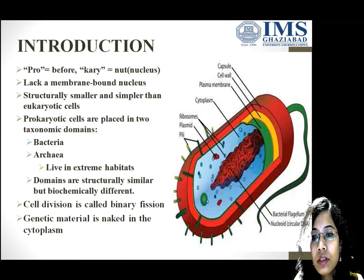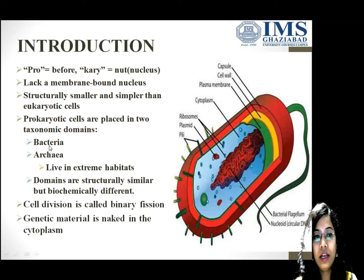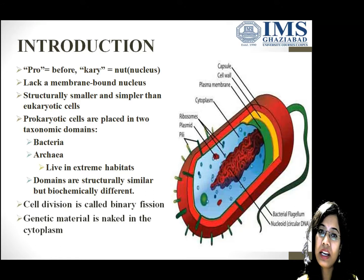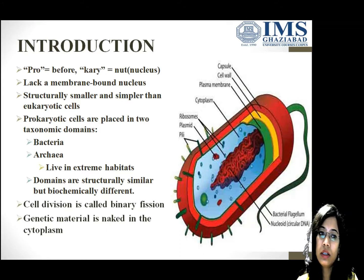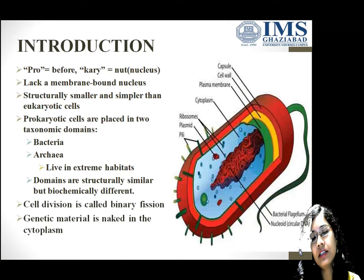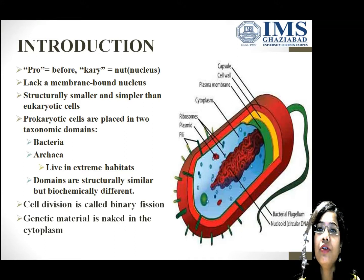Carl Woese in 1977 defined prokaryotes into two taxonomic domains. The first one is bacteria and the second one is archaea. Before this, we studied archaebacteria. In previous times, there were two taxonomic domains — bacteria and archaea — but at present this is further classified and converted into a three-domain system: bacteria, archaea, and eukaryotes.